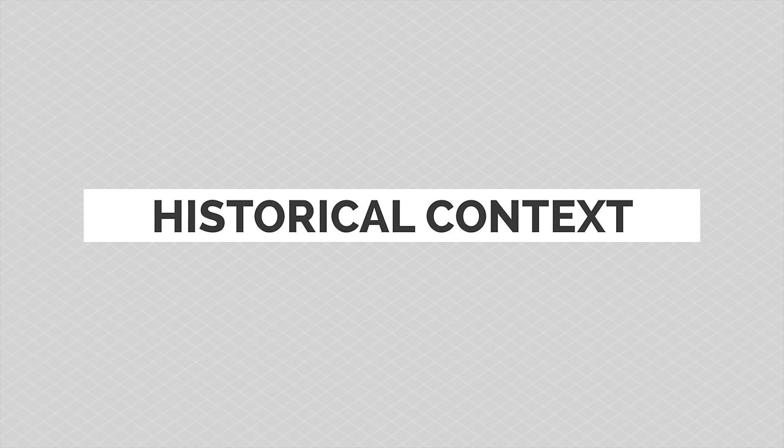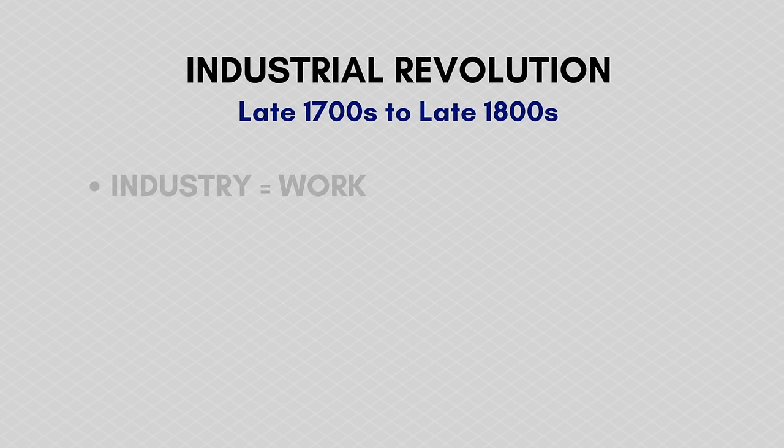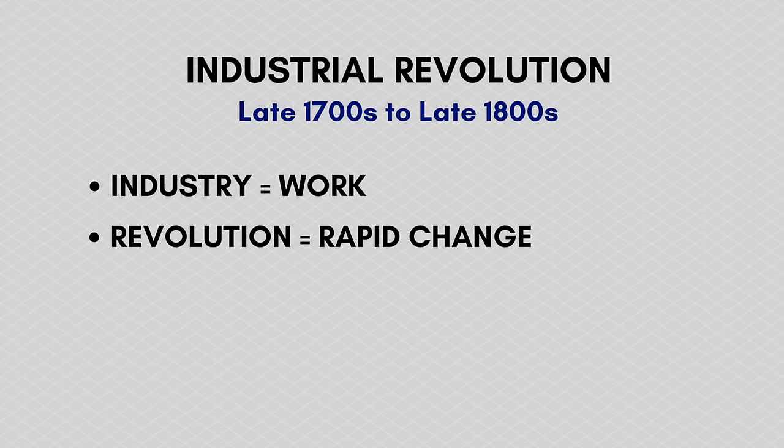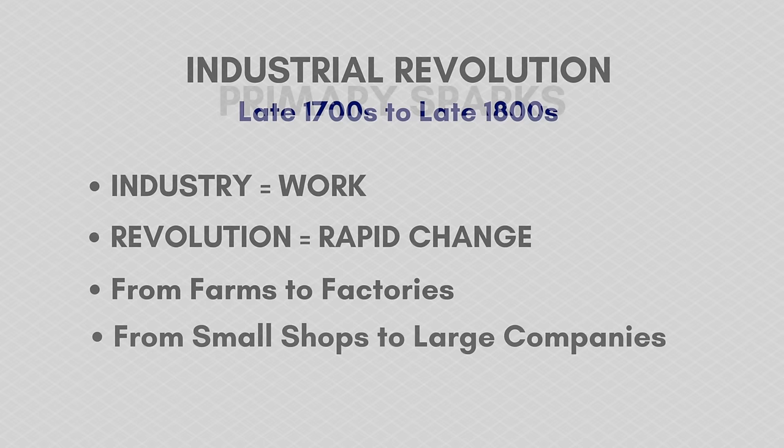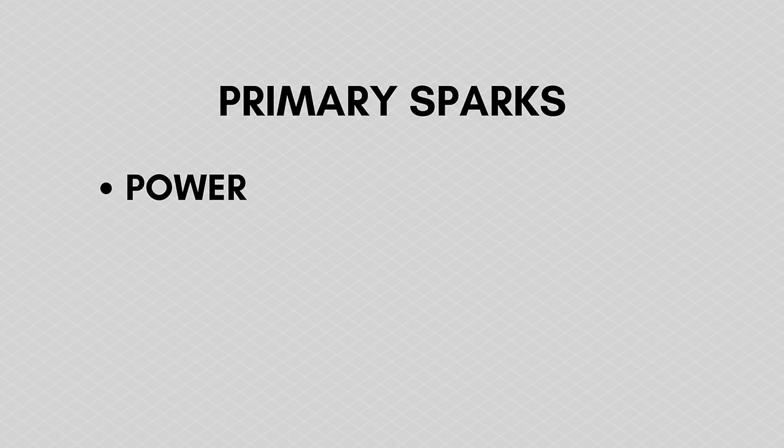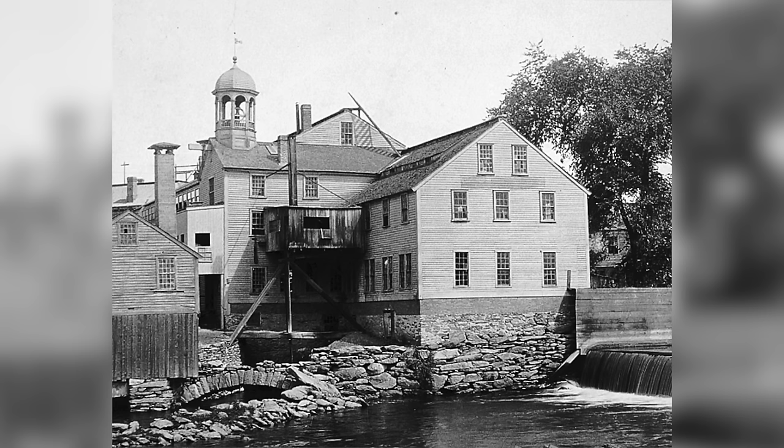Classical management theory came about as a reaction to the Industrial Revolution, which is the late 1700s to late 1800s. Industry equals work, revolution equals rapid change — big changes in the way people worked, the rapid explosion of big factories. People were moving from farms to factories, from small shops to large companies. One of the main sparks of the Industrial Revolution was power — steam power and hydropower specifically. The machines used to manufacture in these new large factories were run on power, not by hand.